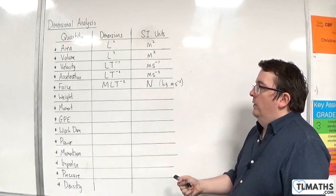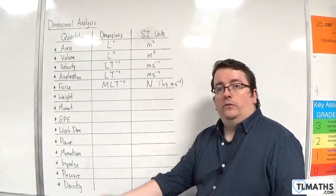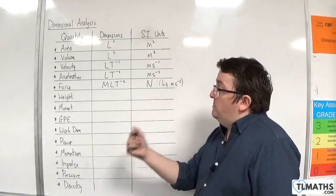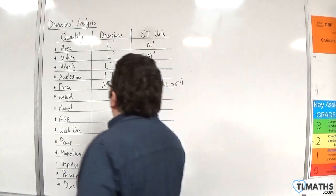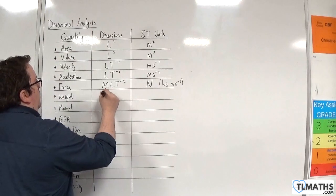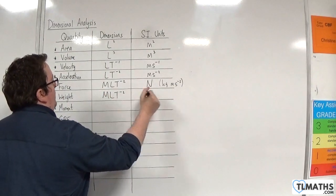Weight is just mass times gravity, which is a mass times an acceleration. It's a force, so the dimensions and units are exactly the same as force.